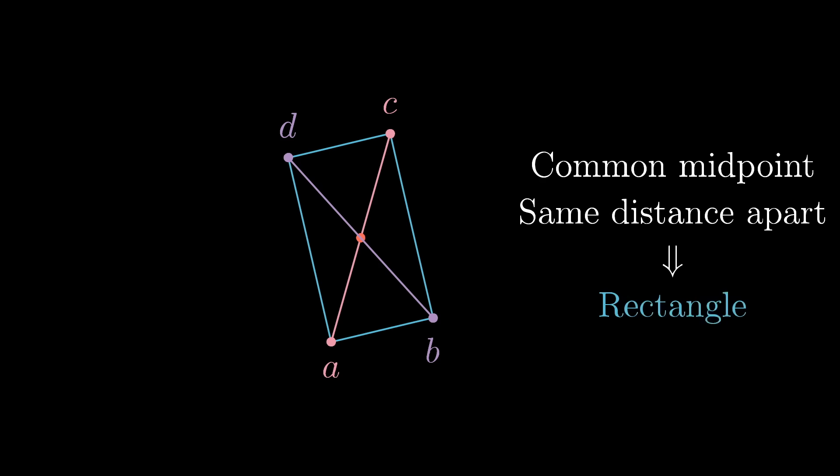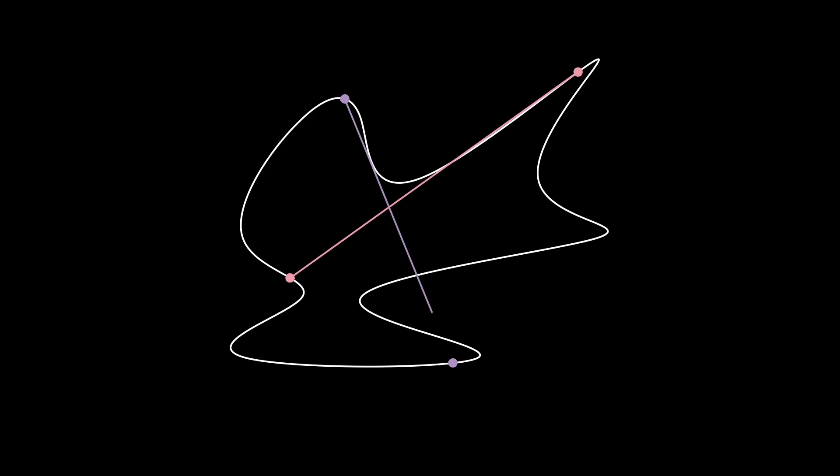So what we're going to do is try to prove that for any closed loop, it's always possible to find two distinct pairs of points on that loop that share a midpoint and which are the same distance apart. Take a moment to make sure that's clear. We're finding two distinct pairs of points that share a common midpoint and which are the same distance apart.